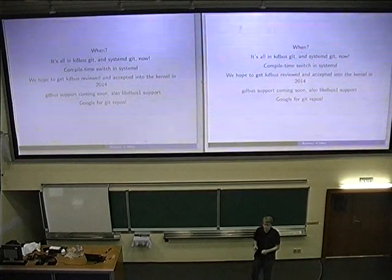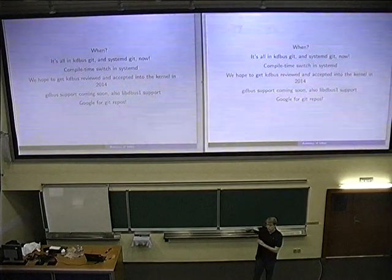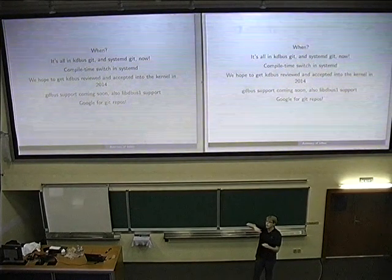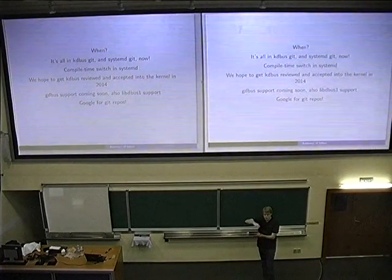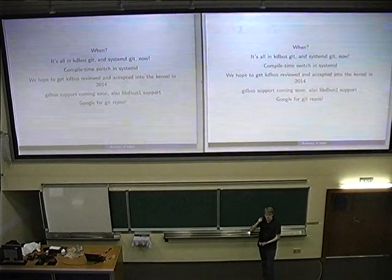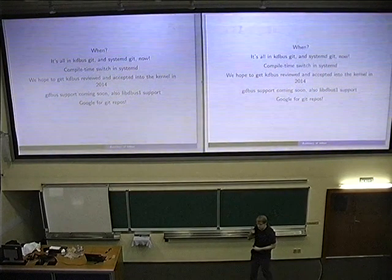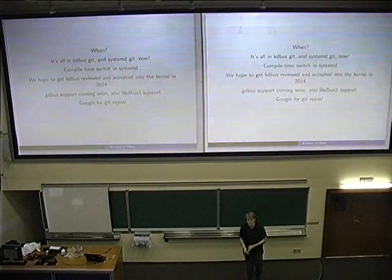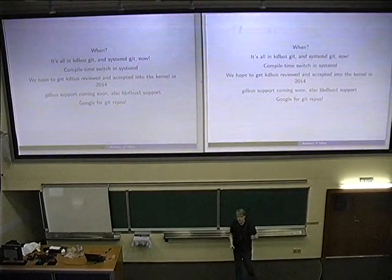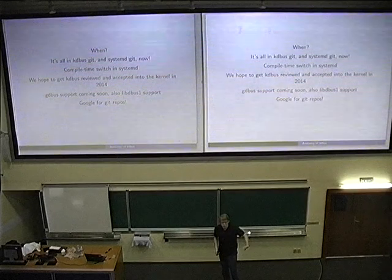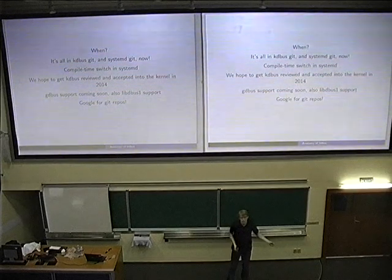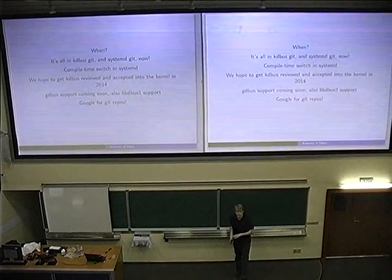The new library handles the policy thing very nicely. If in the new library you define an object and list all the methods, there's one flag which indicates if something is privileged or not, and then the library will do everything automatically for you — checking the capability from the sender and things like that.